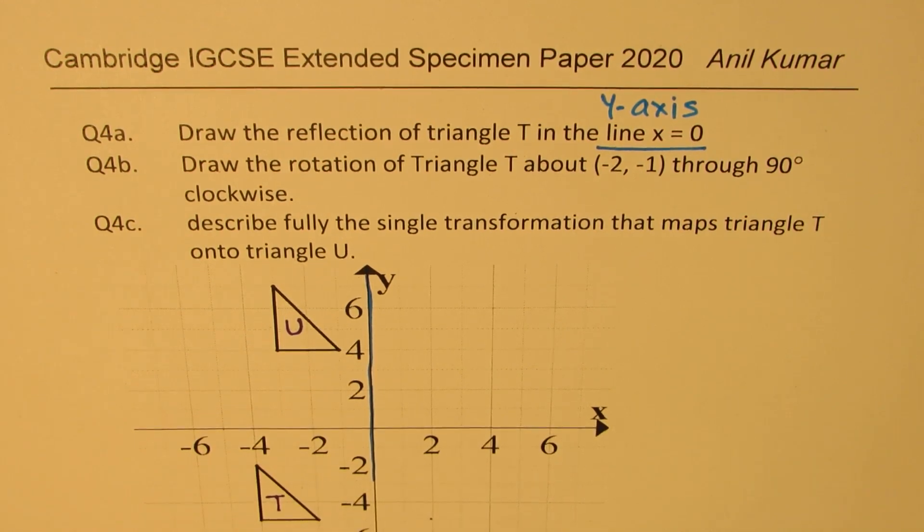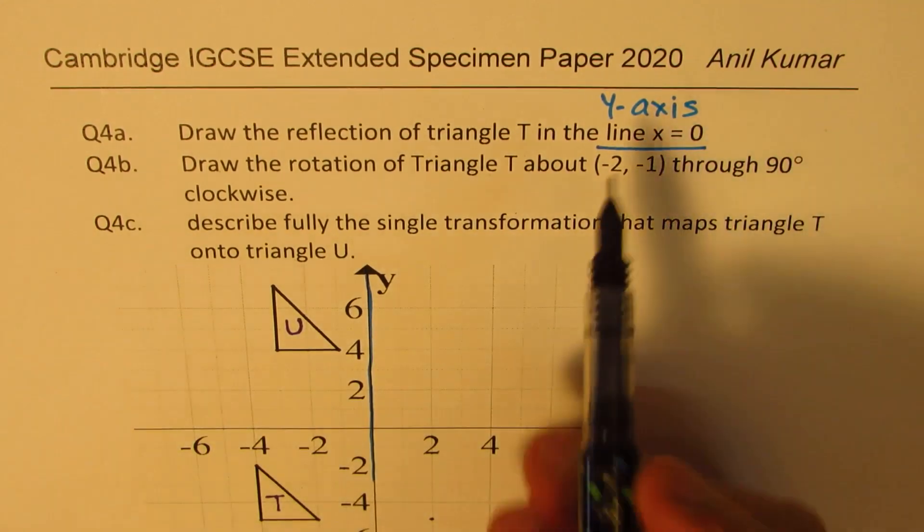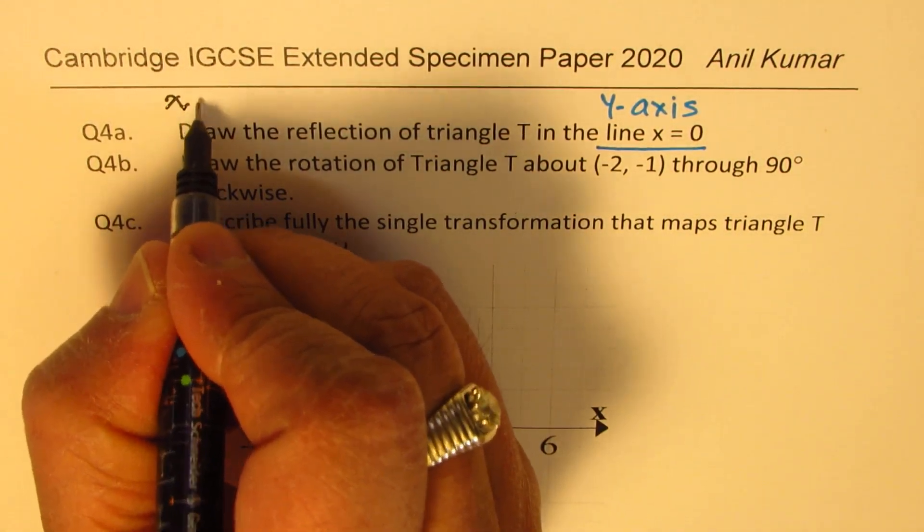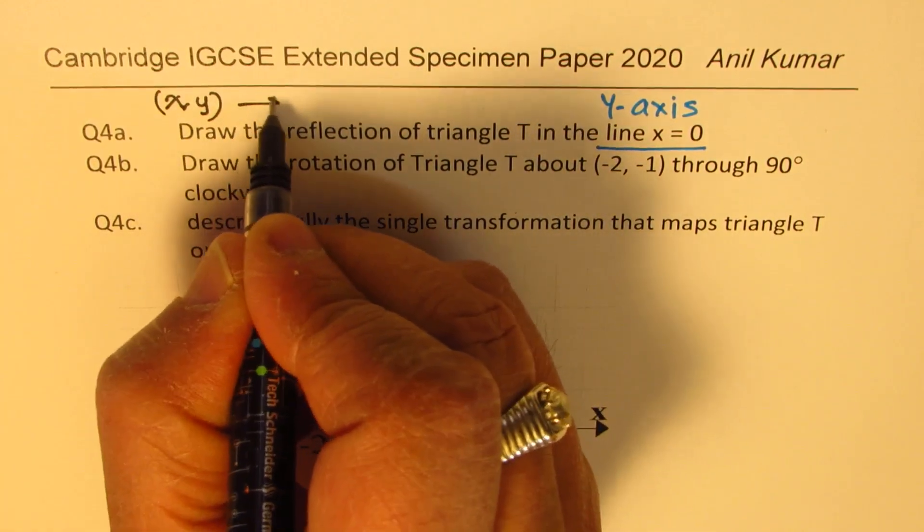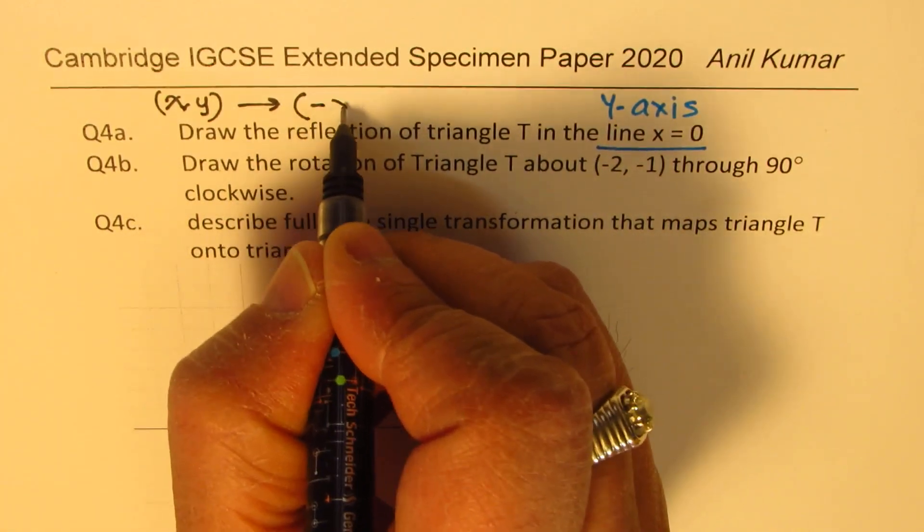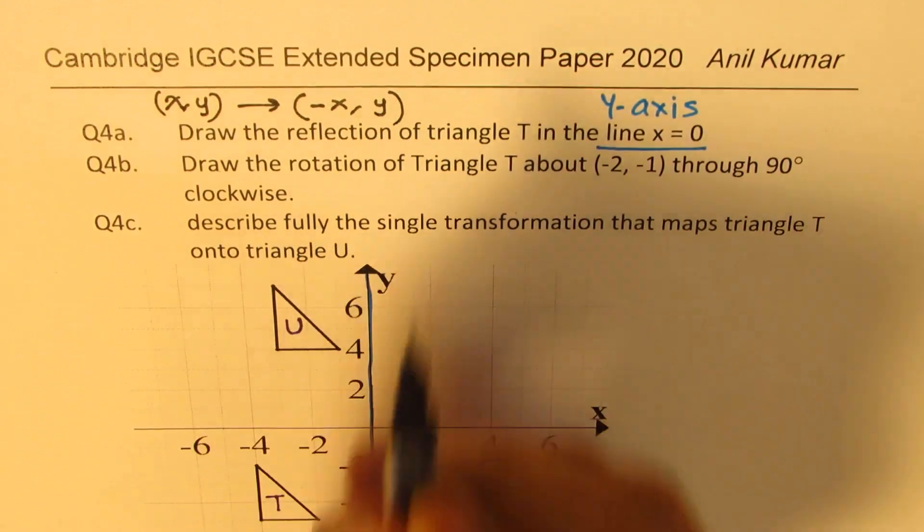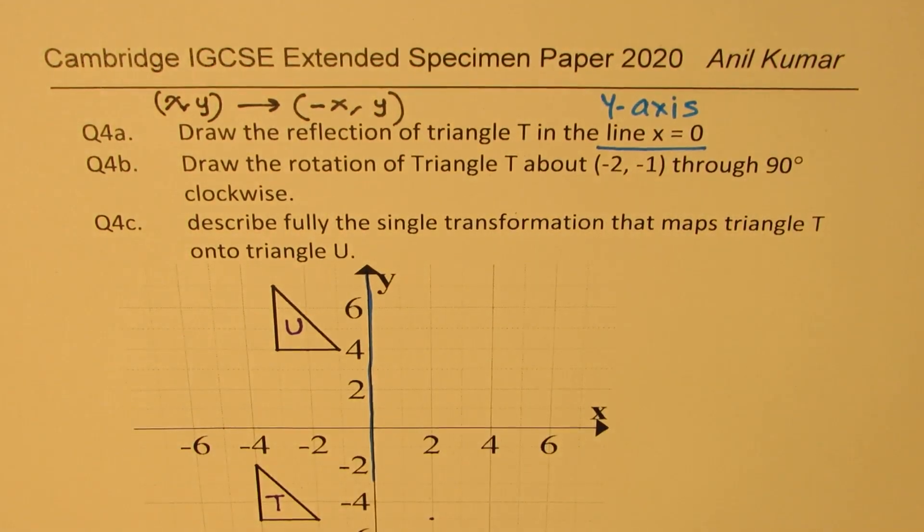What you notice here is, for this particular transformation where it is reflection, the x and y coordinates will change to minus x and y. So the y value remains the same. The x value becomes negative of whatever it was.